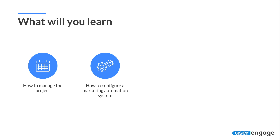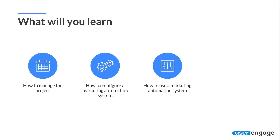Then we will show you how to configure a marketing automation system. As an example we'll use UserEngage, but we don't want to focus on a specific product — we want to make it very universal so you can apply it even to a very small marketing automation system. Then we'll move on to showing you how to use marketing automation in your sales teams, your marketing teams, and your customer support team, with small dedicated courses for each team so they know how to use the system on a daily basis.